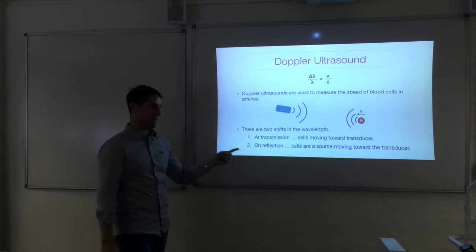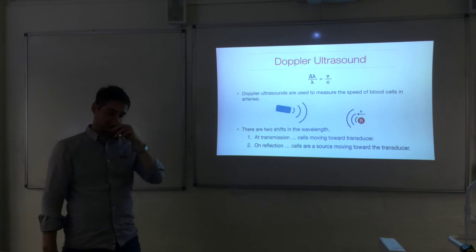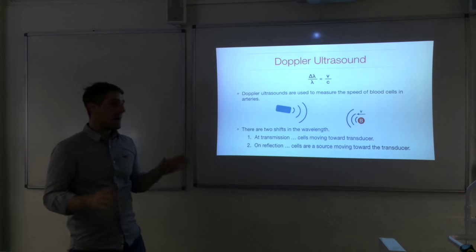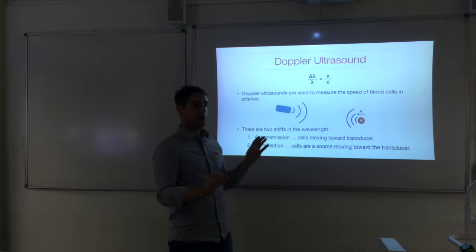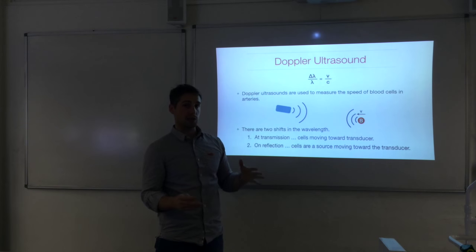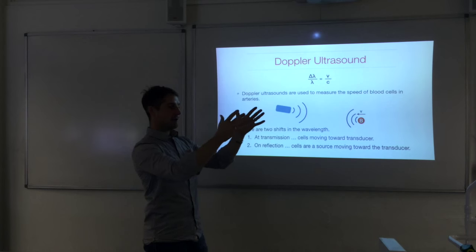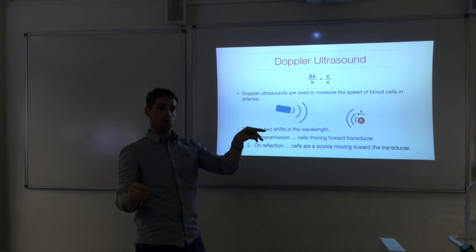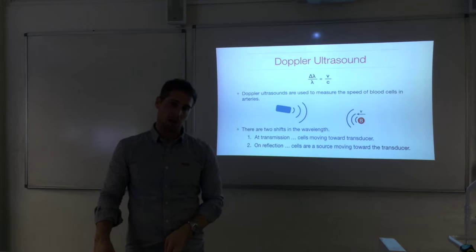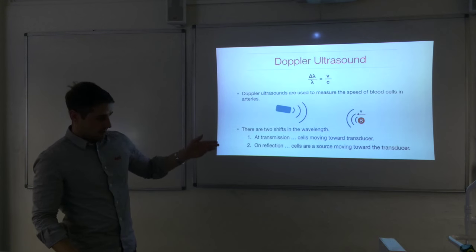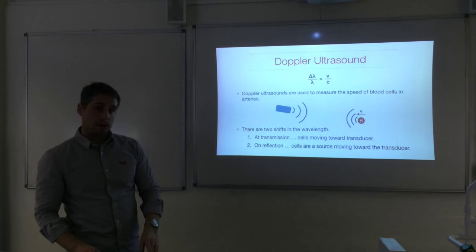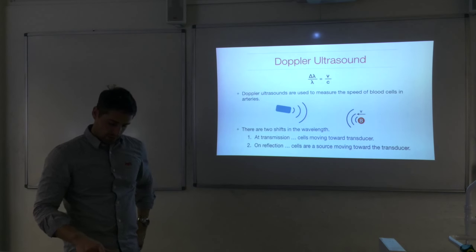If the blood was moving away, you would get two increases in wavelength. You can also superimpose the Doppler information with the 2D B-scan ultrasound image, plotting where the arteries are and recording the speed of blood flow directly on that image. That is Doppler ultrasound.